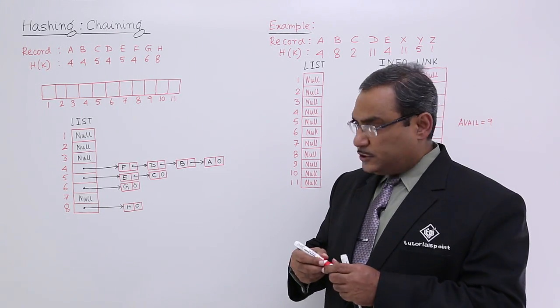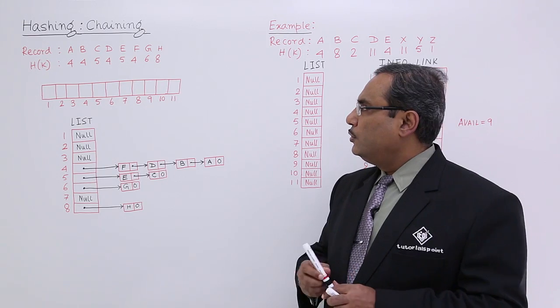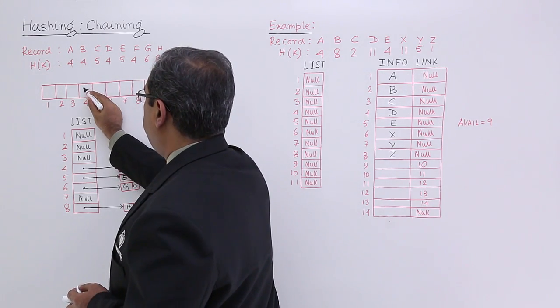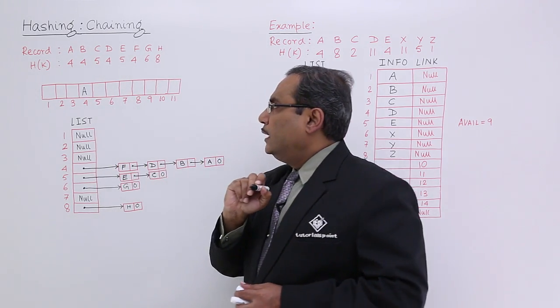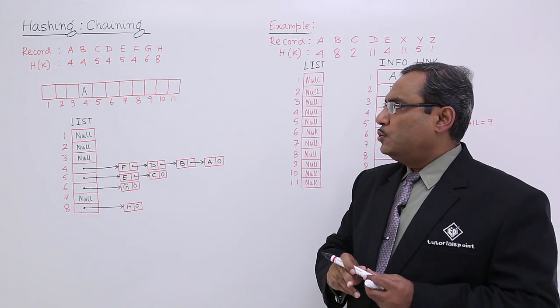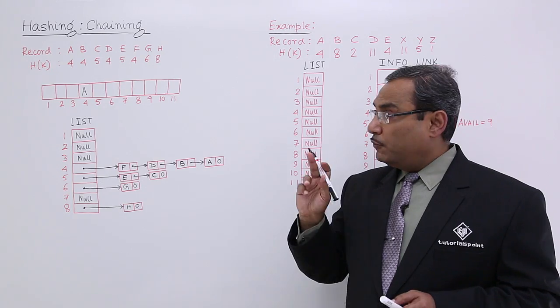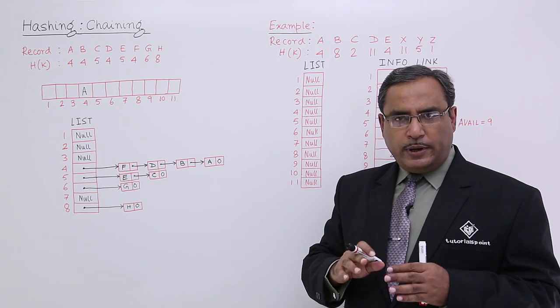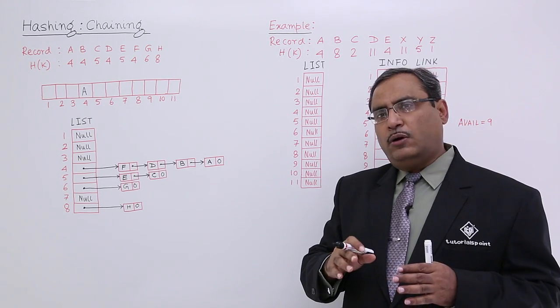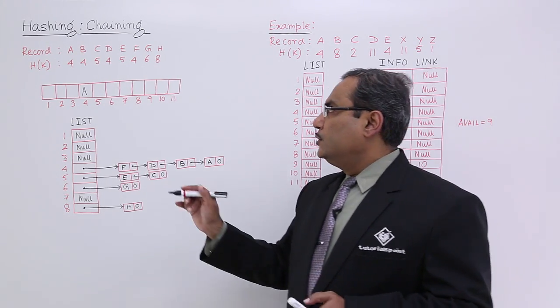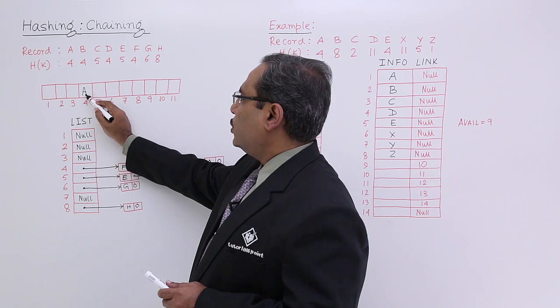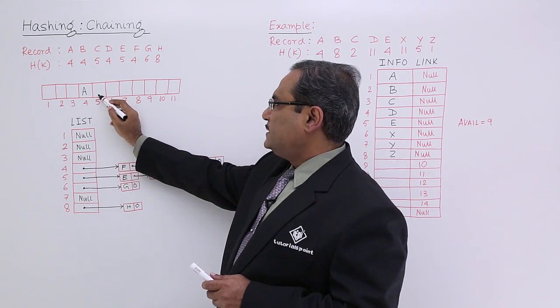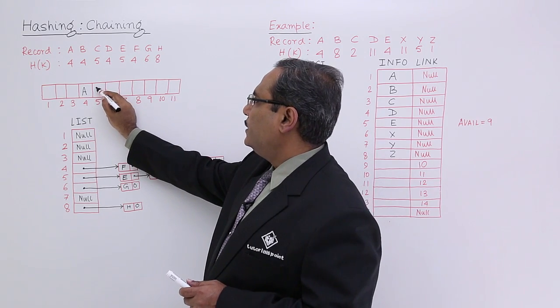Now you see, A should be stored at location 4. So H of K of A is 4, so I am putting A here. Now B should be stored at location 4, but the fourth location is preoccupied. So collision has taken place. Here we are taking the linear probing as the collision resolution technique. So I shall go for 4, but it is occupied. I shall linearly search to the next free space, let it be 5, so I am putting B here.